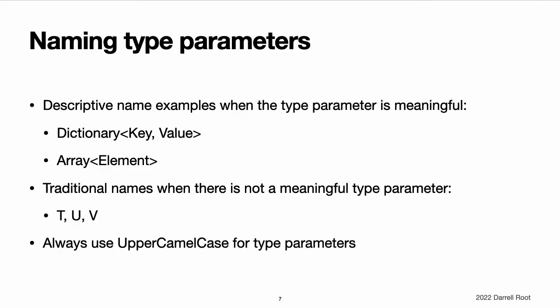Naming type parameters. In most cases, type parameters have descriptive names, such as key and value in dictionary's key-value, and element in array's element, which tells the reader about the relationship between the type parameter and the generic type or function it is used in. However, when there is not a meaningful relationship between them, it is traditional to name them using single letters, such as T, U, and V, as seen with T in the swapToValues function. Note, always give type parameters upper camel case names, such as T and myTypeParameter, to indicate that they are a placeholder for a type, not a value.